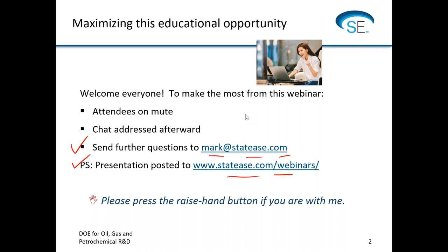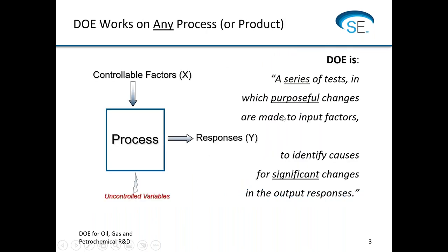And then we'll advance from there to pretty powerful optimization tools for process and mixture. I'd really like to start at the very basic with a very high-level view — way above the forest at 20,000 or 30,000 feet — to discuss what the basic idea is of design of experiments. And probably the biggest thing is that it's a purposeful approach. We're being proactive and changing factors that we can control, therefore able to measure responses and establish a cause-and-effect relationship where we can predict the response Y as a function of X.